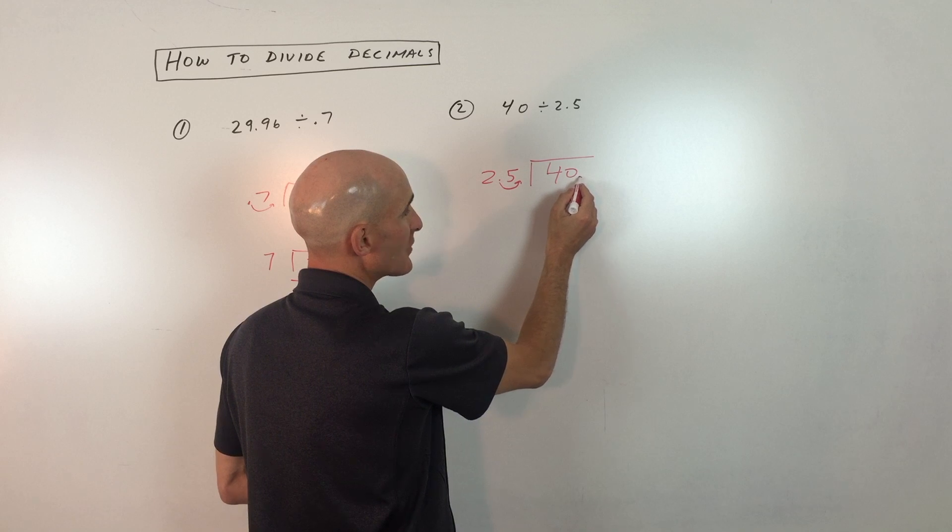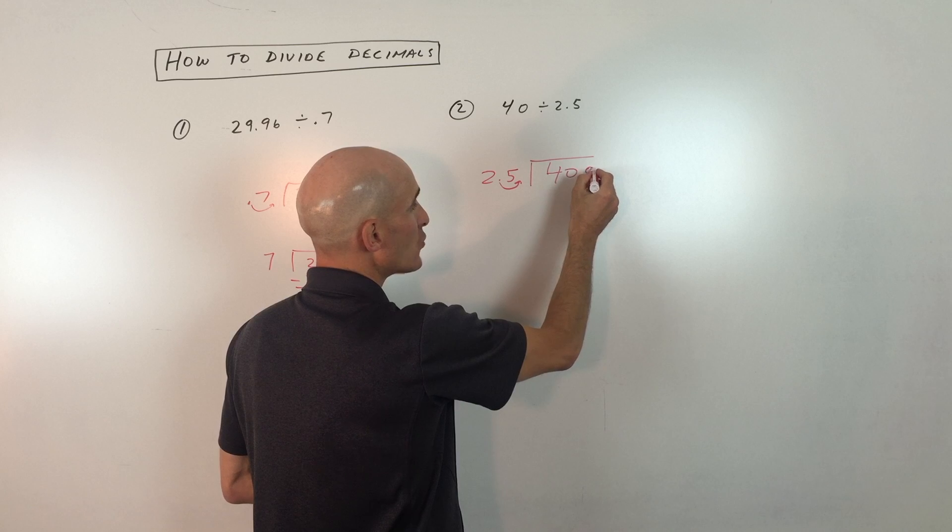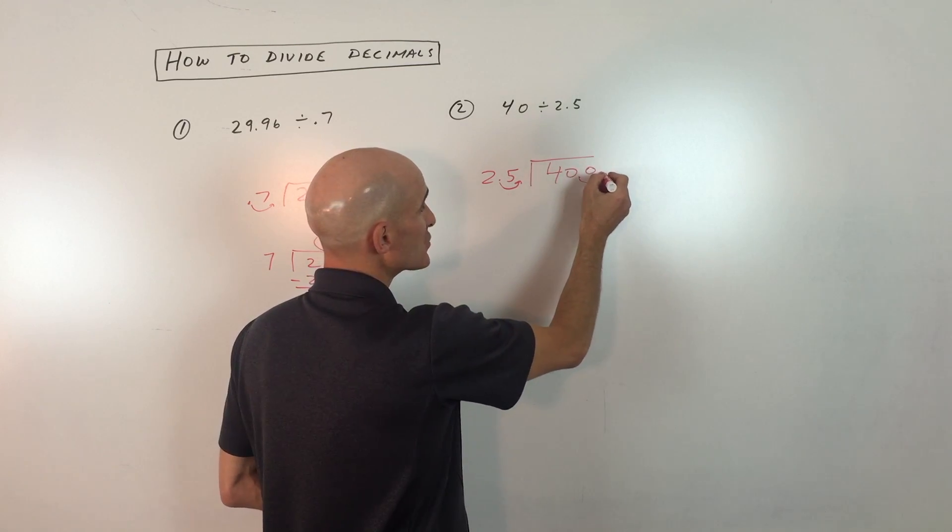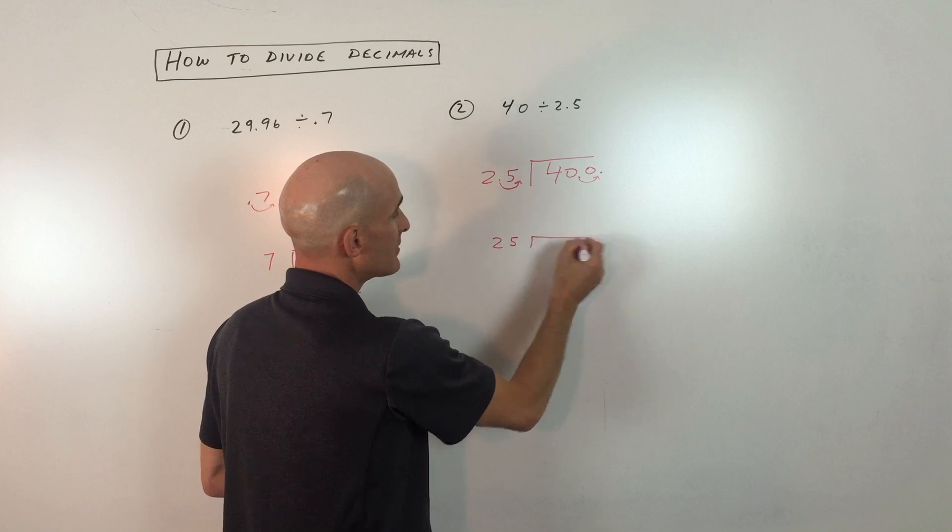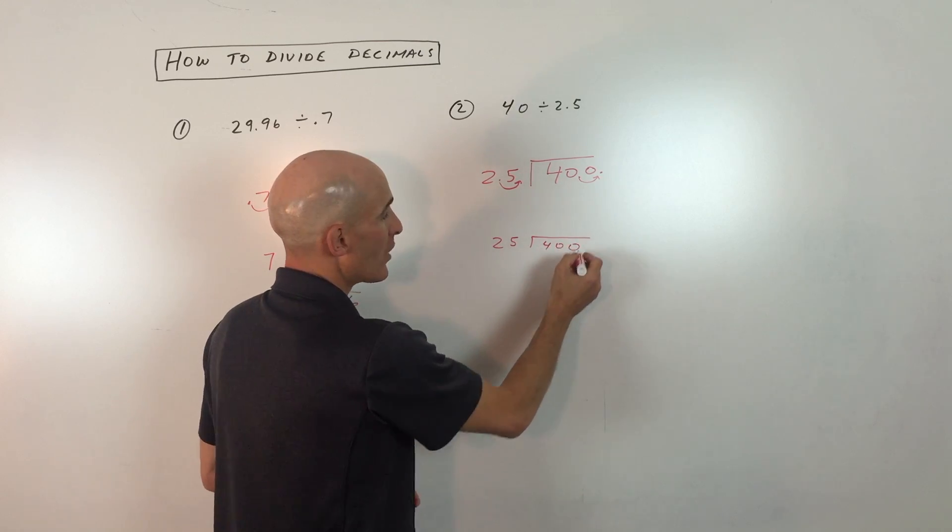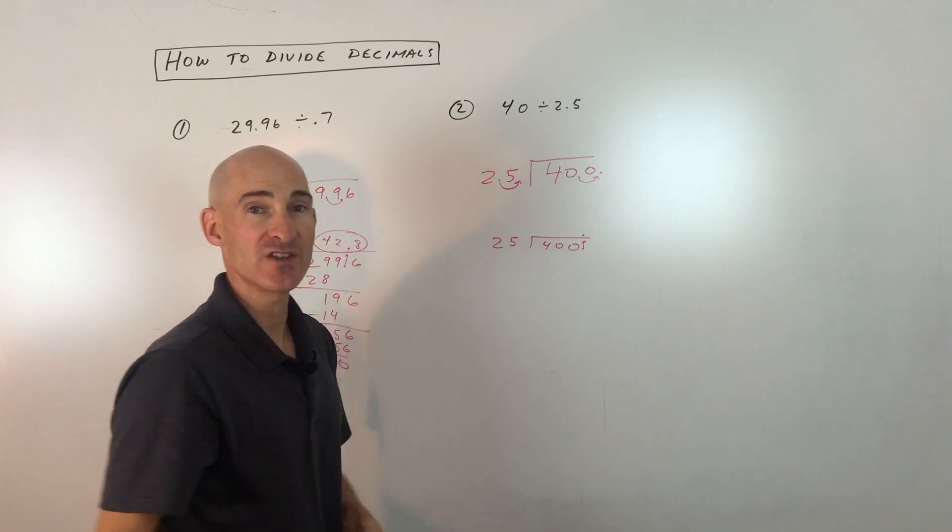Right now, the decimal point is at the right of the number. We're going to move it one place, so we have to put a placeholder there. We put a zero for a placeholder. Let's rewrite it. We have 25 going into 400. There's our decimal point. Let's bring it right up there on the division bar.